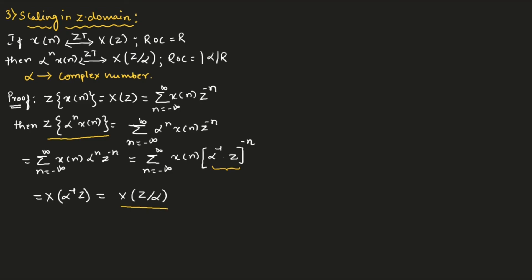Since alpha is a complex number, if alpha equals exponential to the power of j omega naught, then the Z transform of exponential to the power of j omega naught N times x of N equals X of exponential to the power of minus j omega naught times Z.